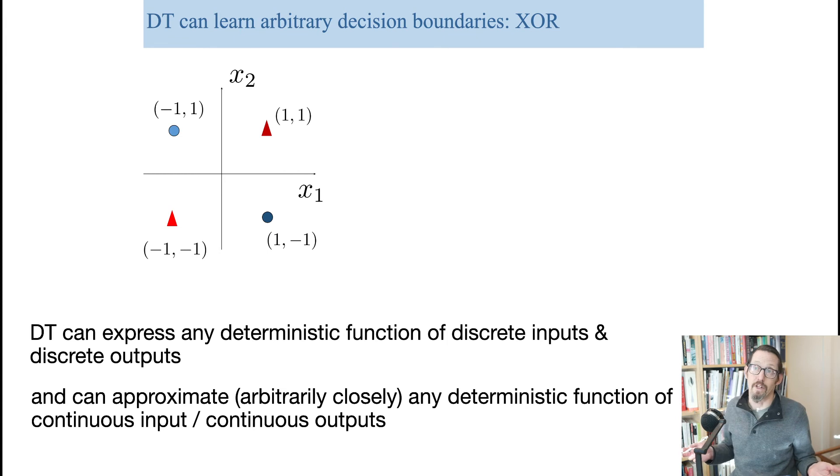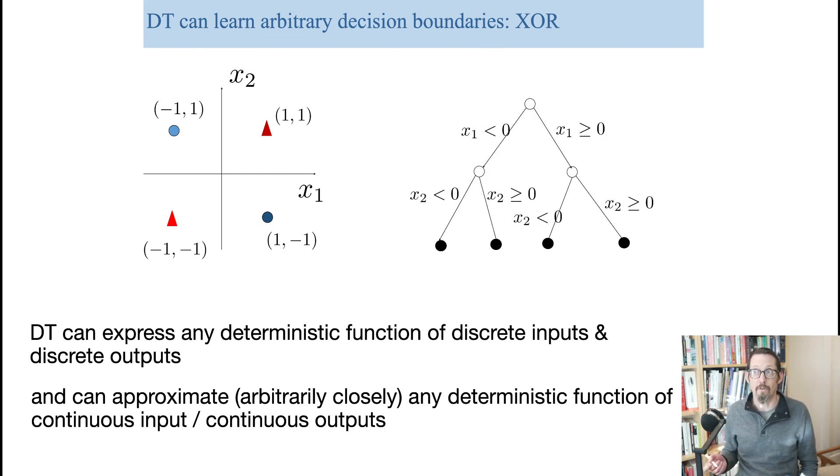Now, the good news about decision trees is that they can learn any arbitrary thing. It's really quite cool. So our classic example of a task which is not linearly separable is the exclusive or task. Right? And the decision tree can indeed approximate this. And this is what a decision tree that did that would look like. How does that work? Well, we can take any one of those parts. So here's the minus one, minus one. And we just go, bing, less than zero. Bing, x2, less than zero. And we follow it through. So we can do that for each one of them.